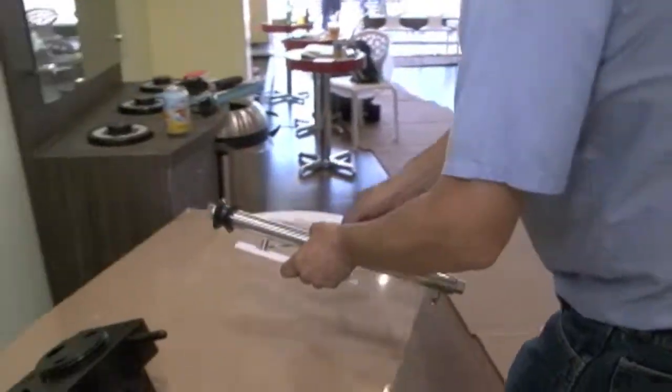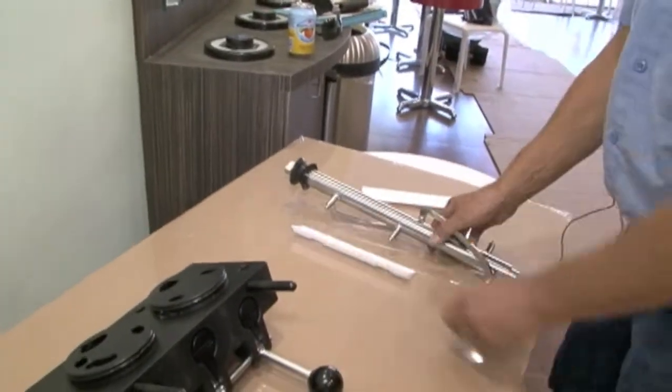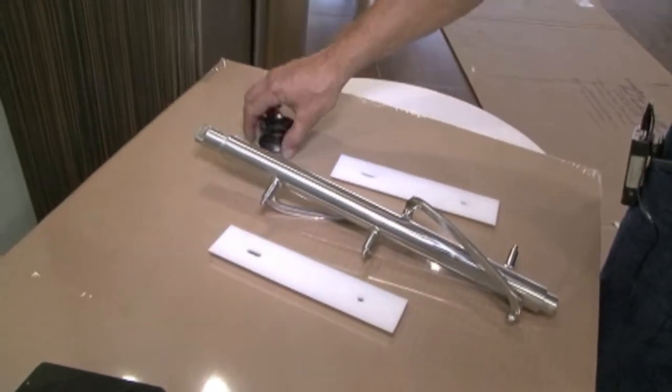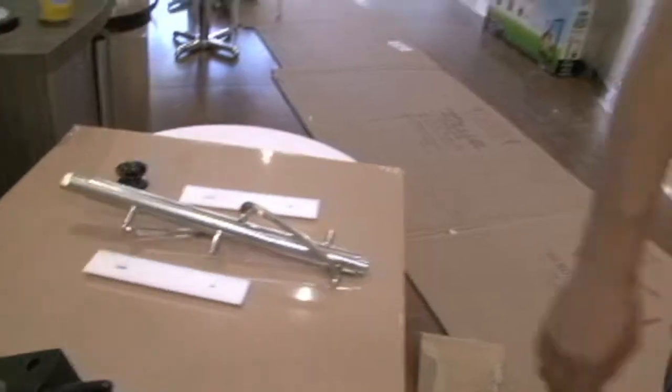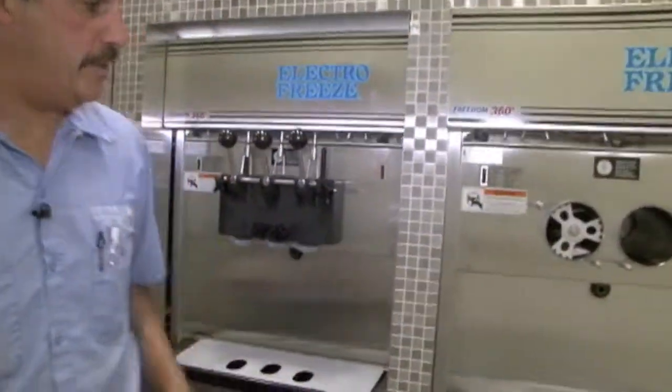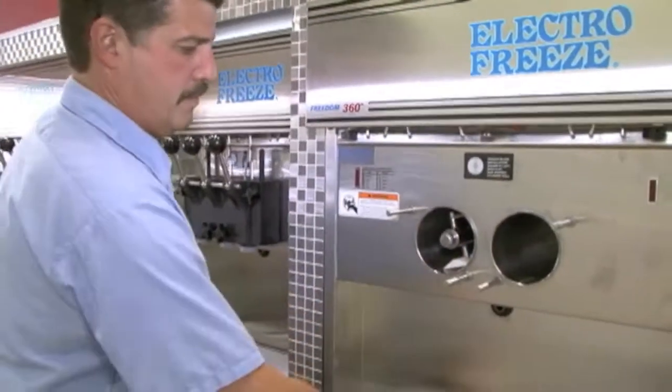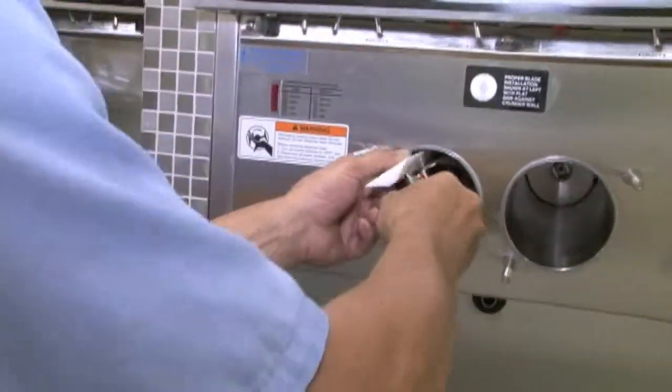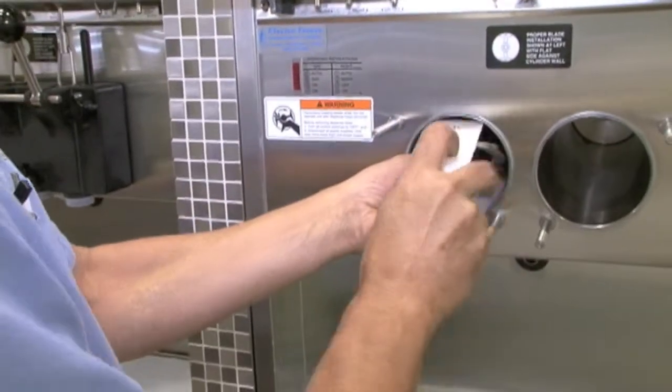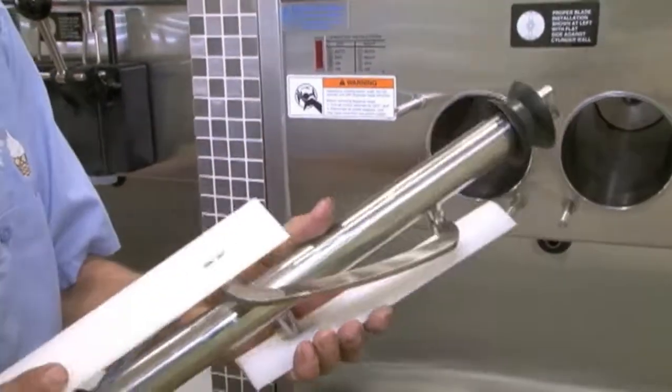So you've got three parts, actually four. A seal, two blades, and the shaft itself. So these parts are interchangeable. Side to side, it's the same. Pull that out. And I'm going to grab it this time and pull it out.